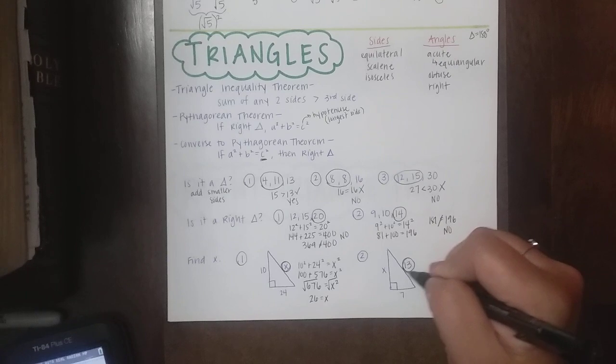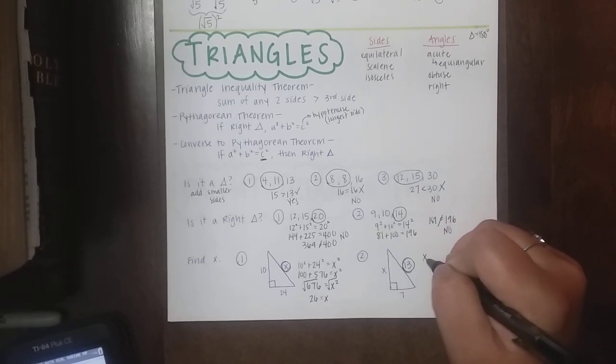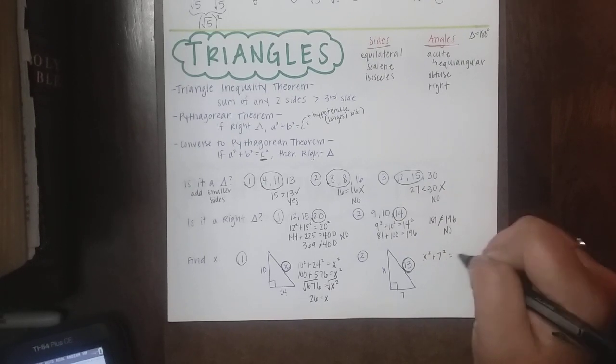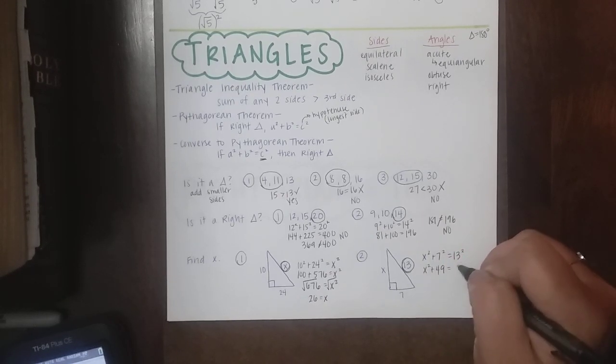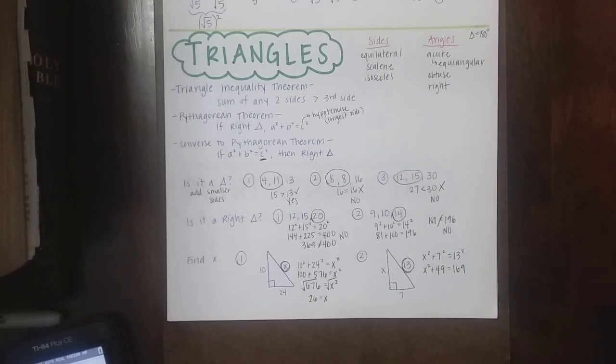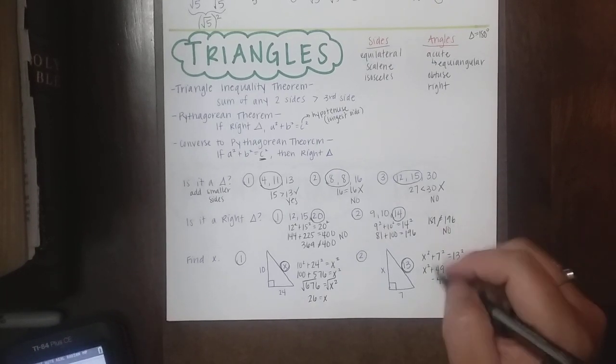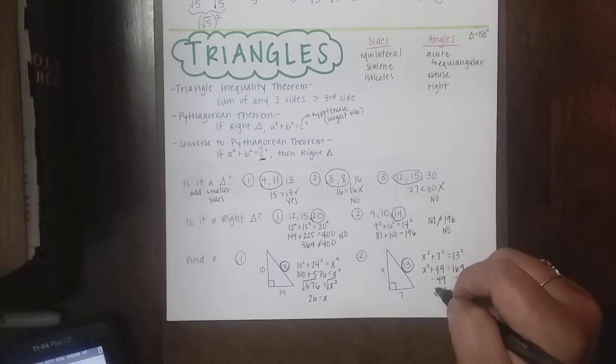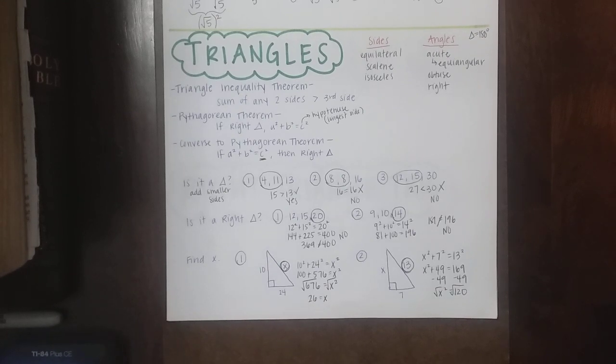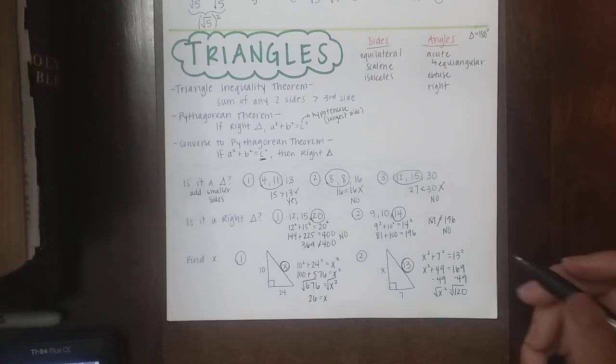For the second one, 13 is my hypotenuse. So that's my C. And then A and B doesn't matter. So I'm just going to say X squared plus 7 squared has to equal 13 squared. So X squared plus 49 has to equal 169. And then I'm going to solve for X squared. So I'm going to start by subtracting 49 from both sides. So 169 minus 49 gives us 120. And then I have to square root. Now, 120 is not a perfect square. So that means I'm going to have to break it down. I'm going to have to simplify my radical.